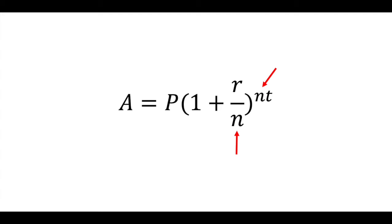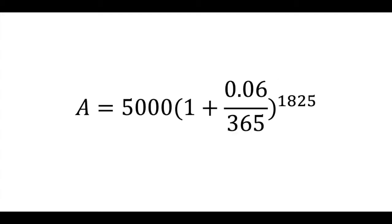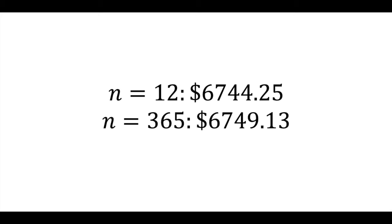Interesting thing about compound interest, if you increase the frequency of compounding up to a certain point, you see an incremental but still real increase in the overall result of the compounding process. If we compounded interest daily instead of monthly, for example, the amount in the account at the end of the five-year term would be $6,749.13 instead of $6,744.25.